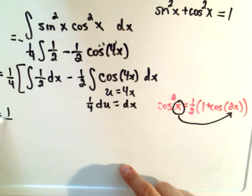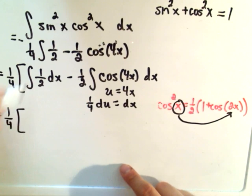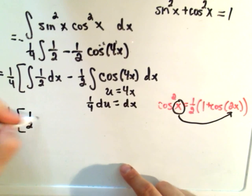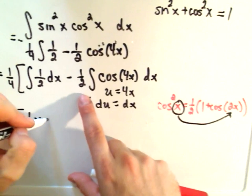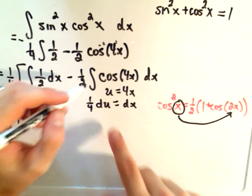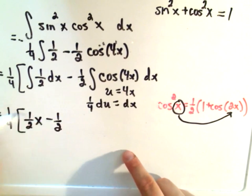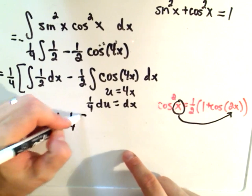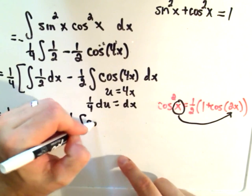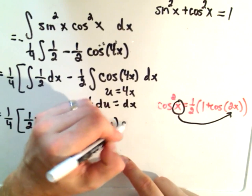When I integrate, I get one-fourth. For the one-half, I get a one-half x term. I've got my minus one-half. If I pull the one-fourth out front, I'm integrating cosine of u, du.